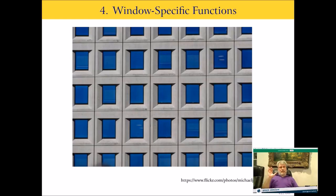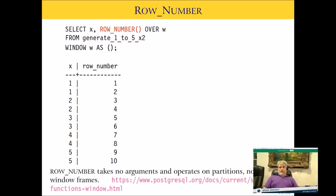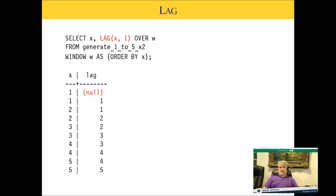We've now covered frame clauses with traditional aggregates — SUM, COUNT — which also work with AVERAGE and everything else. Now I want to cover window-specific functions: aggregates that are specific to window functions and not available as generic aggregates. The first interesting one is ROW_NUMBER, a window-specific function that allows you to number your rows. With our dataset 1, 1, 2, 2, 3, 3, 4, 4, 5, 5, ROW_NUMBER simply assigns sequential numbers 1 through 10.